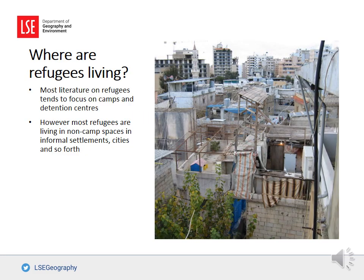If we look at the literature on refugees, particularly coming from geography and human geography, much of this tends to focus on detention centers or on refugee camps. Scholars who work on detention centers study them within the context of Global North countries such as Australia, the United States, and various European countries including the United Kingdom. They focus not just on how boats and migrants are intercepted, but how they are placed within detention spaces.